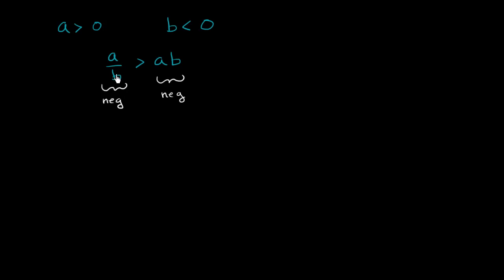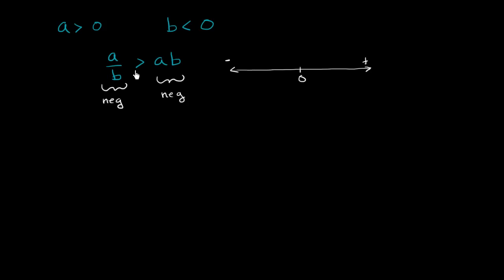So really what we're saying is that we have two negative quantities, and a over b is greater than a times b. Let's visualize that on a number line. So let's say that this right over here is 0, this is the positive direction, this is the negative direction. We know both of these are negative, but a over b is larger, so a over b is going to be to the right of a times b.